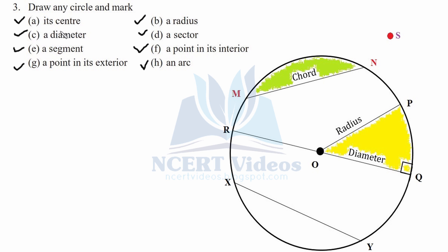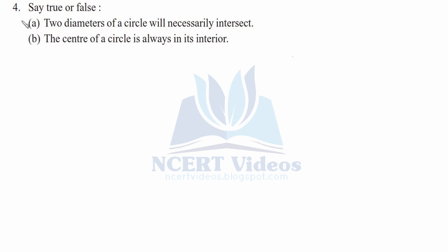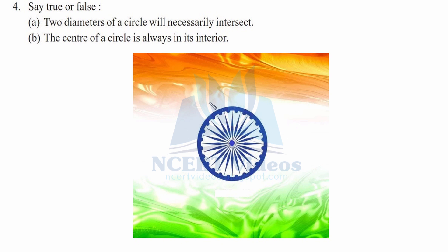Question four: say true or false. Statement one — two diameters of a circle will necessarily intersect. Statement two — the center of a circle is always in its interior. We check with the example of the Ashok Chakra on the Indian flag. All 24 diameters necessarily intersect at point O, the center. So any two diameters of a circle will necessarily intersect at the center. This is true — A part.